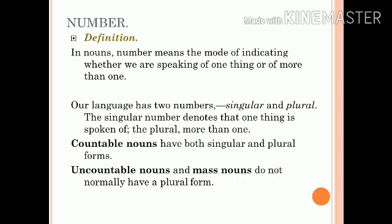In nouns, number means the mode of indicating whether we are speaking of one thing or of more than one. Our language has two numbers: singular and plural. The singular number denotes that one thing is spoken of, and the plural means more than one.